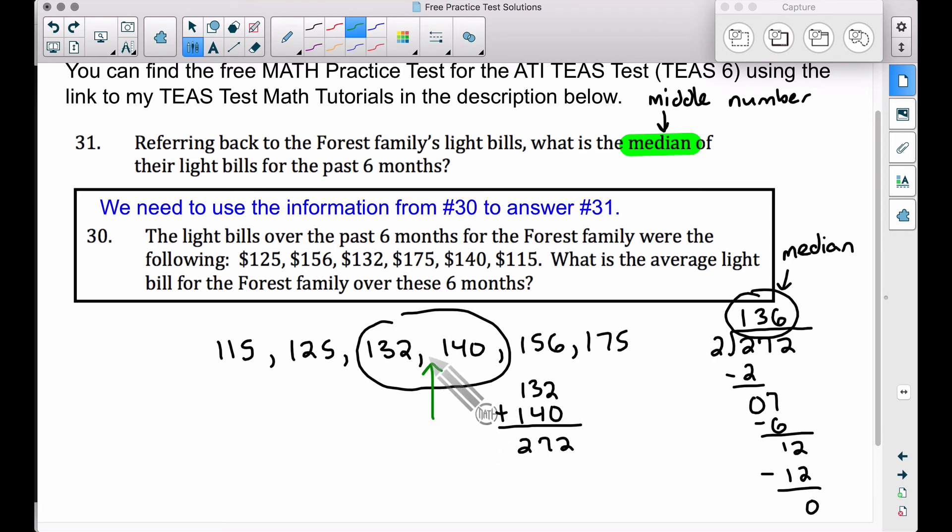Therefore, 136 is going to be our median. And if you actually think about that, even though 136 is not up here, 136 is the number that sits right smack in between these two numbers here. Notice that 136 is four higher than 132, but it's also four lower than 140. It's right smack in the middle of those two numbers.